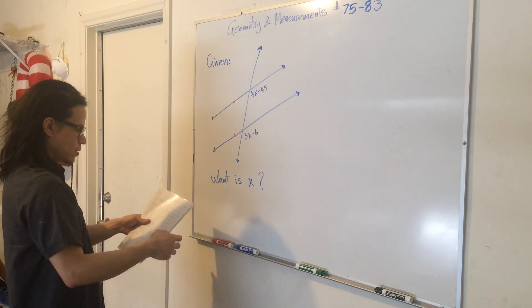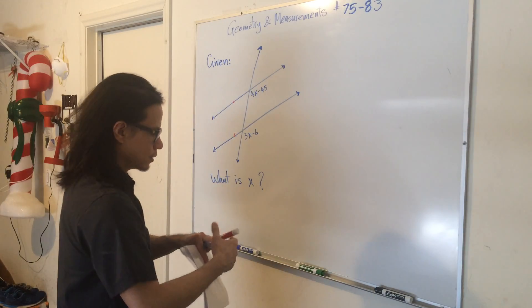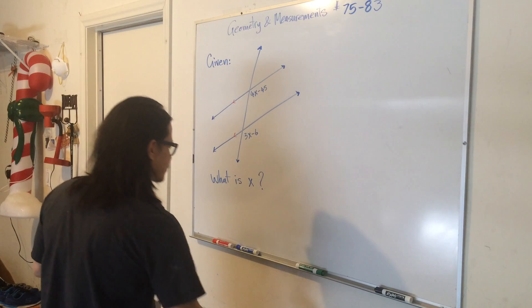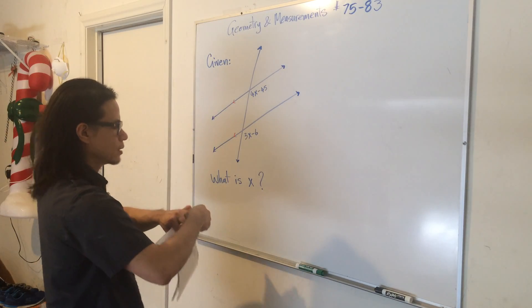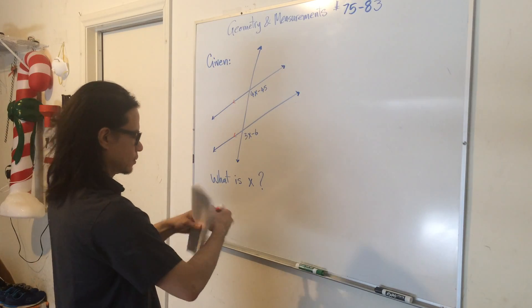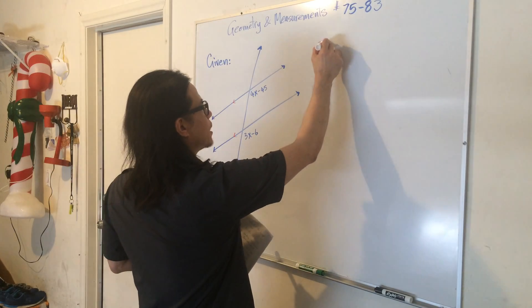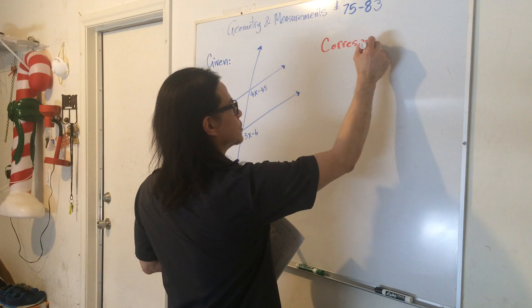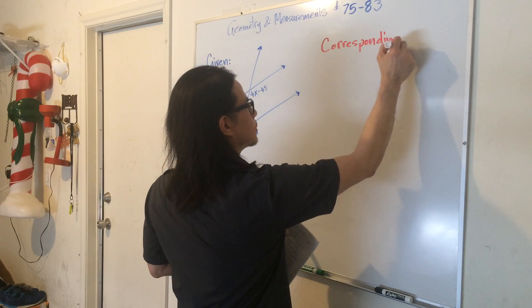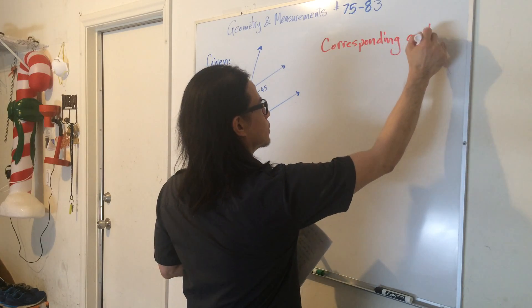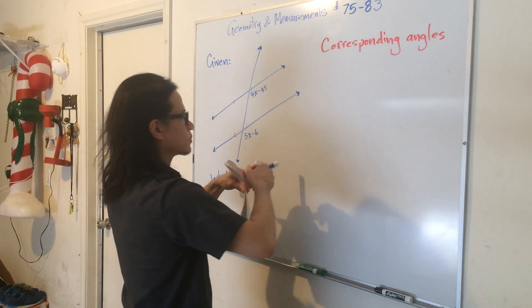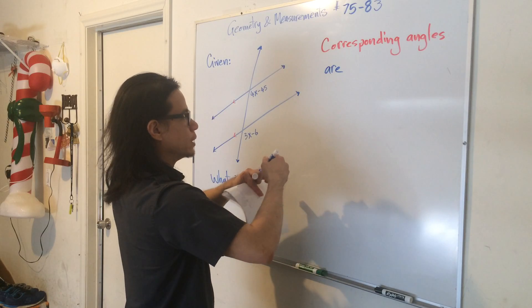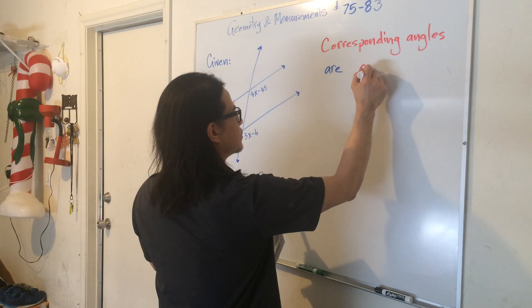So we can say with good certainty that corresponding angles are congruent. Let's make note of that. Corresponding angles are congruent, meaning they have the same measure.